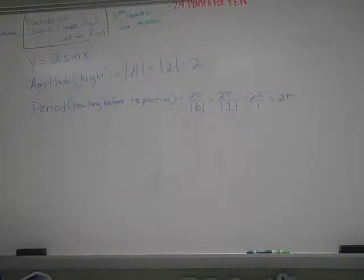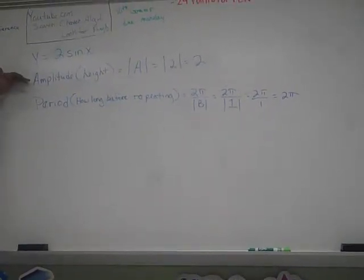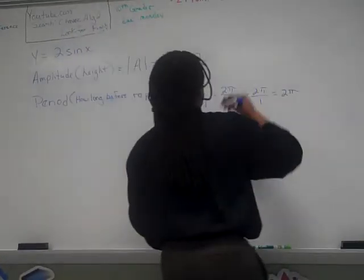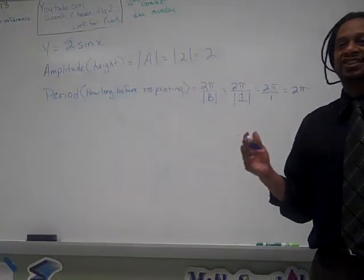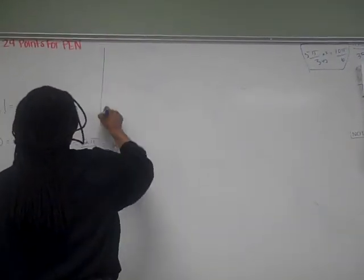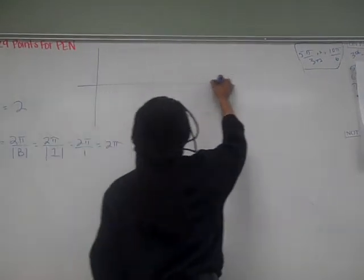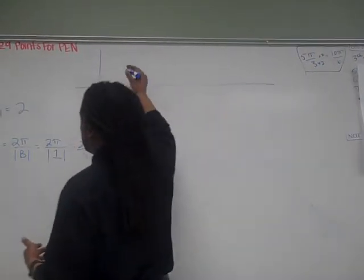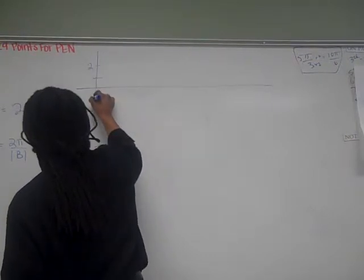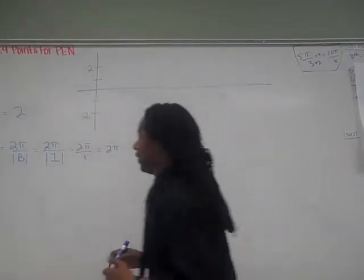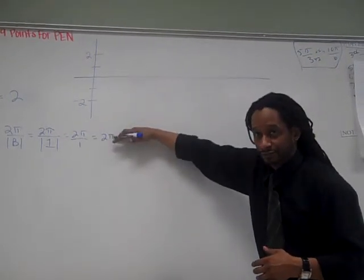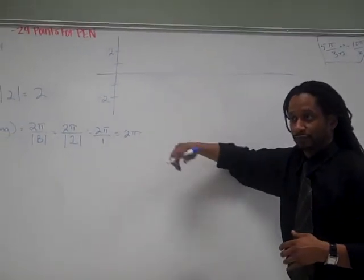First thing I do, I deal with my amplitude because that's what I calculated first. My amplitude, because it's dealing with height, what axis deals with height? The y-axis. So I'm going to do my y-axis first. I go up 2, and however high I go, I'm going to go that low.